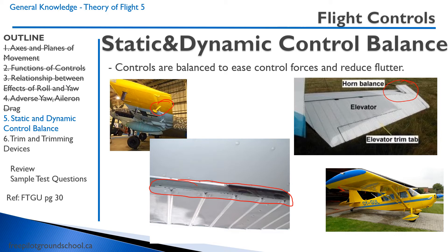Lastly, on the Citabria, we have things called aileron spades. These are another type of dynamic balance incorporated on ailerons. Similar to the horn balance, they make movement of the ailerons easier, so less control force is needed when you want to roll the airplane. This is especially important in this type of aircraft — the Citabria is an aerobatic aircraft, and when you want to roll the airplane, you don't want to have to use a massive amount of force. In the aerobatic context, rolling means going upside down.